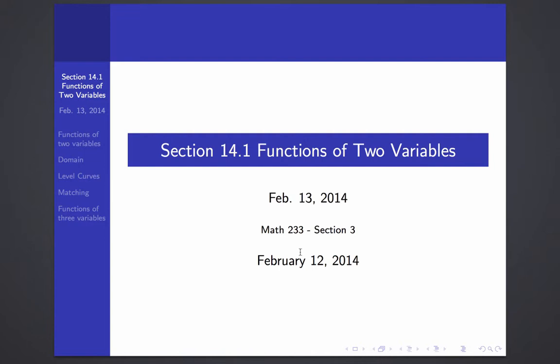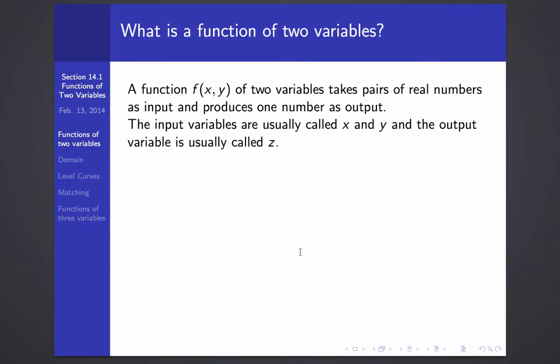So a function of two variables is just a function that takes two input variables and gives one output variable. We'll usually think of the output as z. Of course, it's possible for a function to have several input variables and several output variables. That would be a vector function of several variables, but we won't consider them in this chapter. All of our functions will take two or sometimes more real variables as input and give one real number as output.